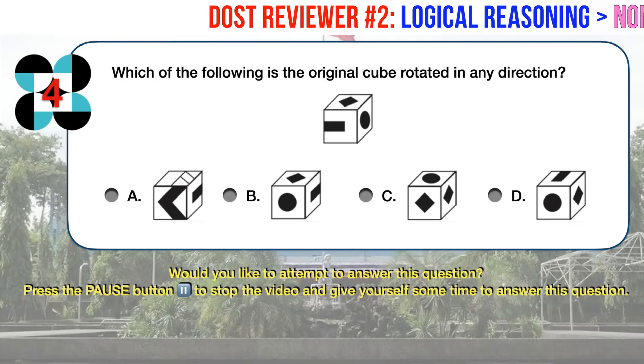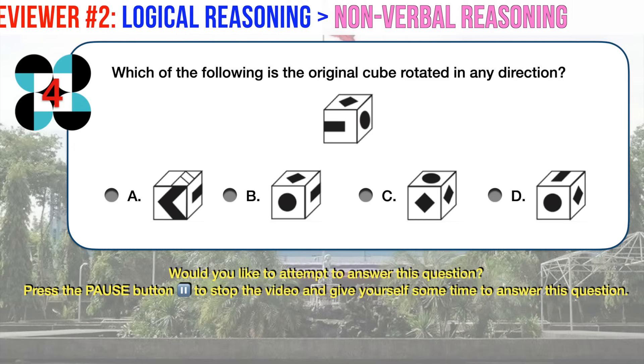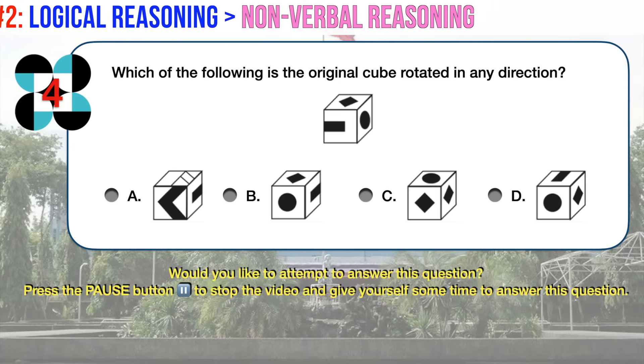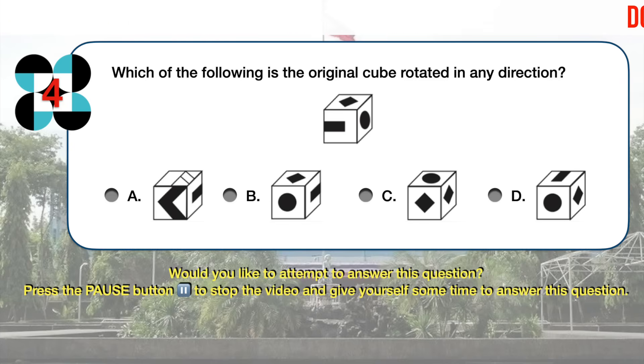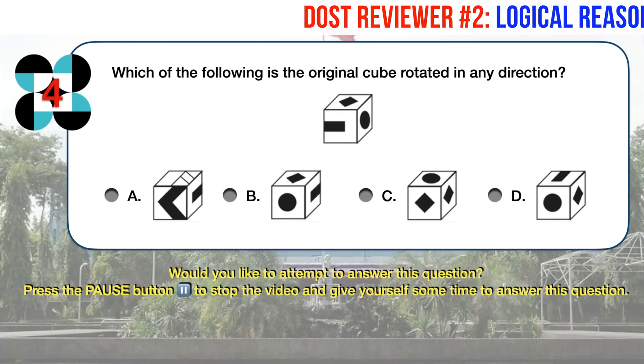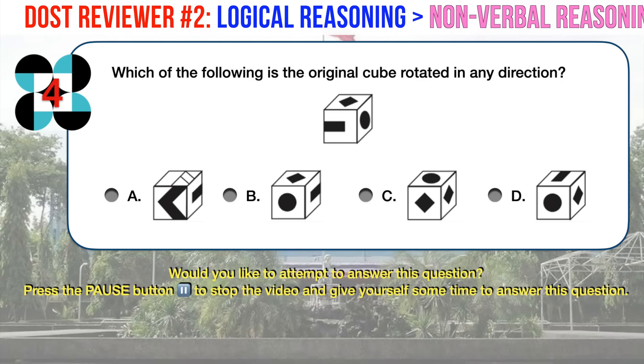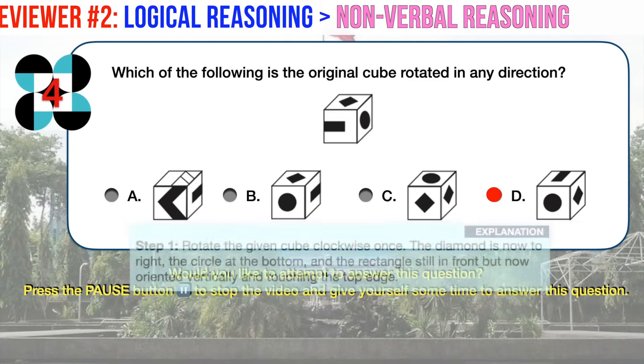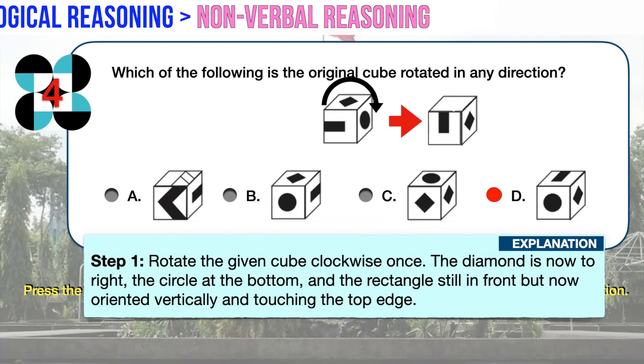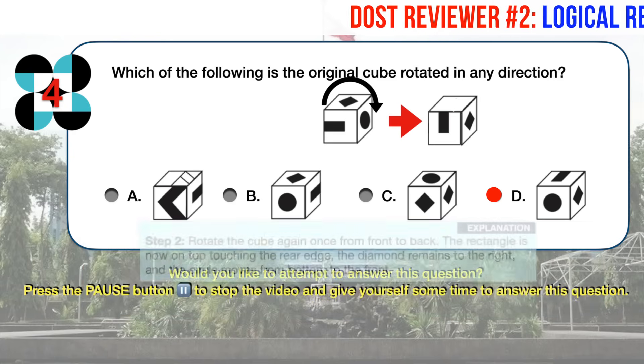Nonverbal Reasoning Number 4. Which of the following is the original cube rotated in any direction? The correct answer is D. Step 1, let's rotate our given cube clockwise once. The diamond is now to the right, the circle at the bottom, and the rectangle is still in front but now oriented vertically and touching the top edge.